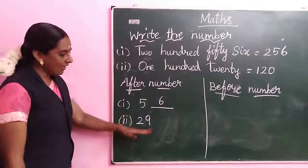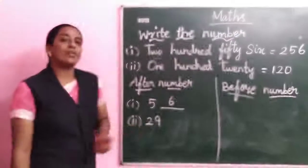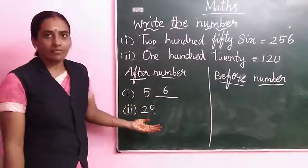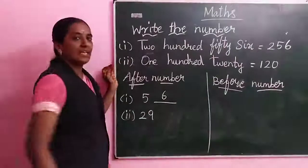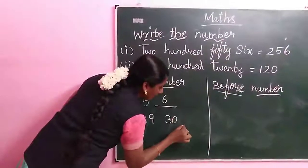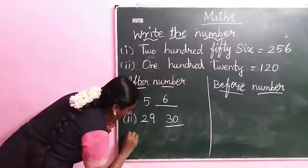29. First listen that: 9 after, what is the 9 after? 9 after is 10. So like this only we are going to write this. 29, 29 after is 30. So answer is 30.